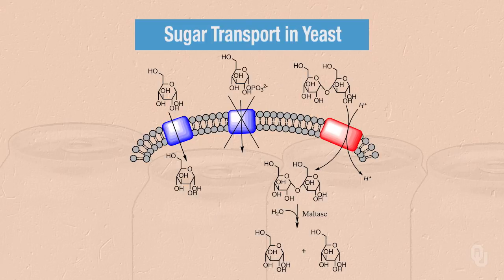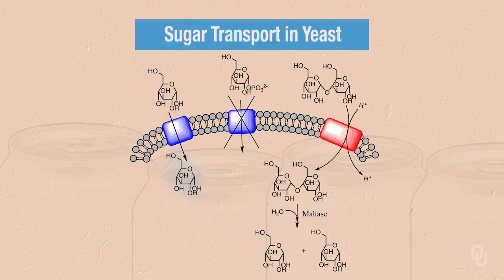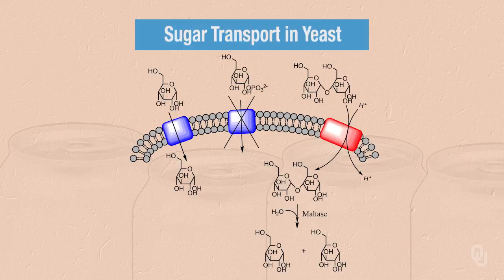The question is: why would the phosphorolysis reaction not be helpful to yeast relying on sugar from the starchy endosperm? To answer this, we have to think about sugar transporters in yeast. The glucose transporter is an integral membrane protein that facilitates the diffusion of glucose from outside the cell into the cell. However, if glucose has been phosphorylated — as in glucose-1-phosphate — it is no longer able to pass through the glucose transporter. So if the barley enzymes produced glucose-1-phosphate, that phosphorylated sugar would not be available to the yeast.